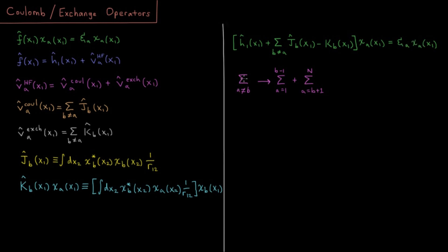And just so we're clear and we want to spell everything out fully, the sum A not equal to B is going to be a sum from A equals one to B minus one plus a sum from A equals B plus one to N. So we're including every term of all of the electrons in the different spin orbitals except for the one where A is equal to B.